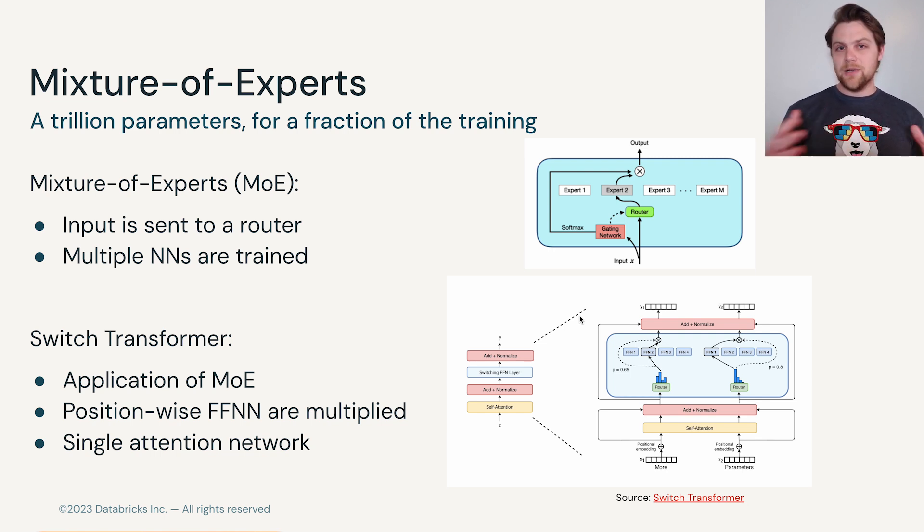When we think about where the parameters lie in large language models, more than two-thirds of them are present in the position-wise feedforward neural networks. These are present in each of their transformer blocks and they add extra enrichment to the vectors after they've come out of the attention mechanism.